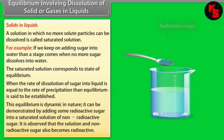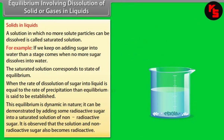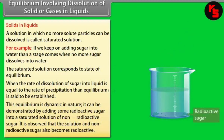This equilibrium is dynamic in nature. It can be demonstrated by adding some radioactive sugar into a saturated solution of non-radioactive sugar. It is observed that the solution and the non-radioactive sugar also becomes radioactive.